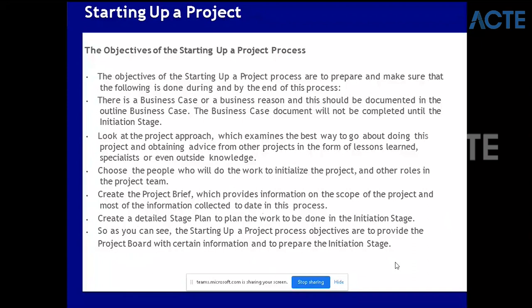Generally what happens is every quarter or every six months there will be a board meeting where all these projects will be discussed. So before that, we do a Starting Up of the Project to put it up for the board. Let's say in a company it happens every January and every August - somewhere around December we'll do starting up the project, create a project brief and business case, and present it to the project board which will happen in January. The project board will look into all planned projects, approve the viable ones, and then they'll start the project.